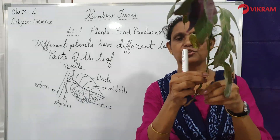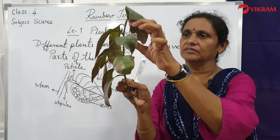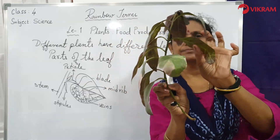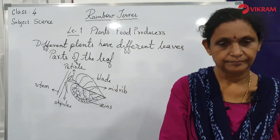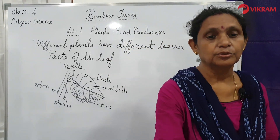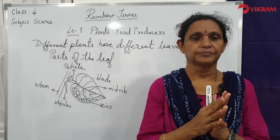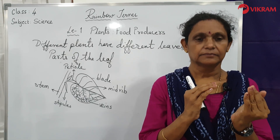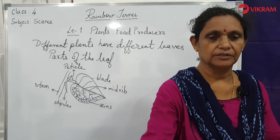You can see the different varieties of leaves and how they are joined to the stem area. This is one part of the leaf. The second part is the stalk or the petiole.